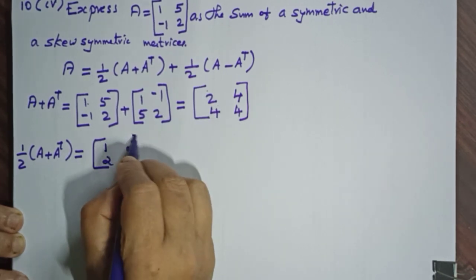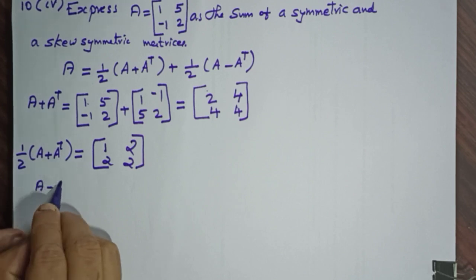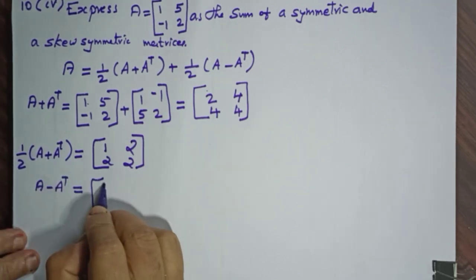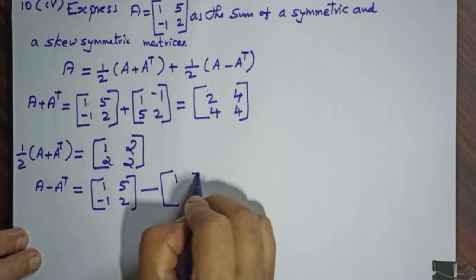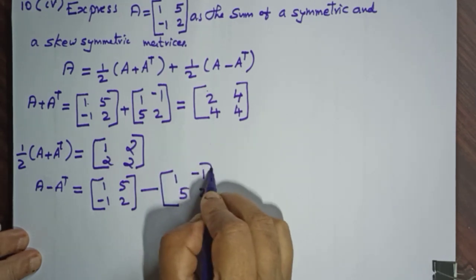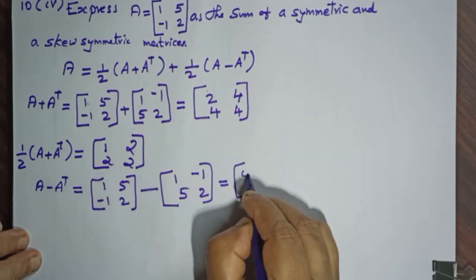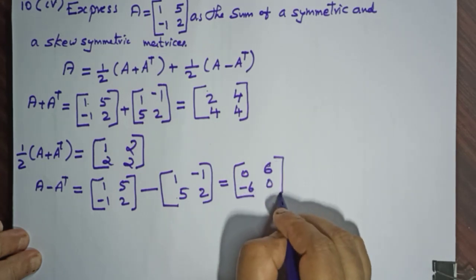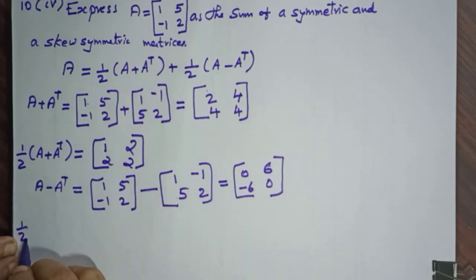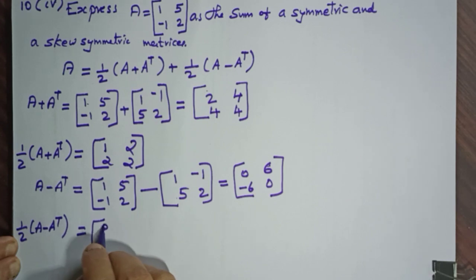So half of A plus A-transpose equals the matrix (1, 2 / 2, 2). Now finding A minus A-transpose: (1, 5 / −1, 2) minus (1, −1 / 5, 2) equals (0, 6 / −6, 0). Half of A minus A-transpose equals (0, 3 / −3, 0). This is a skew-symmetric matrix and the first one is a symmetric matrix.